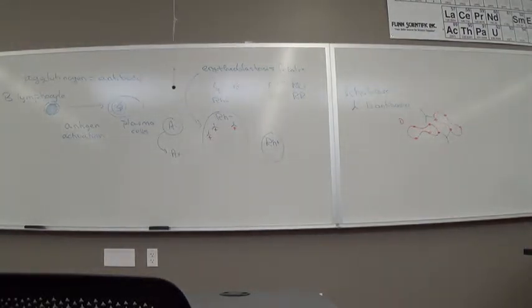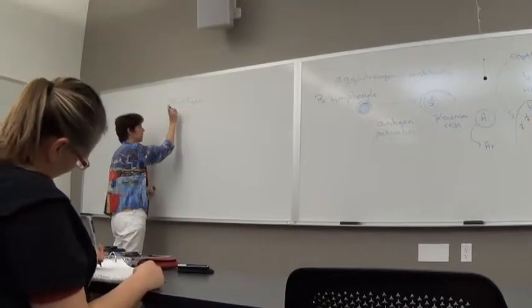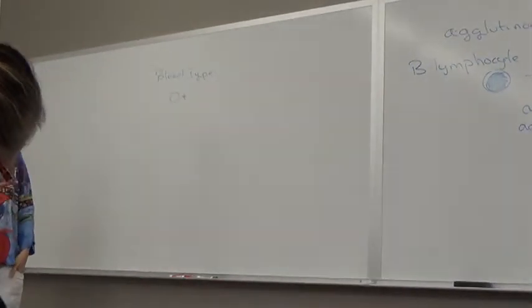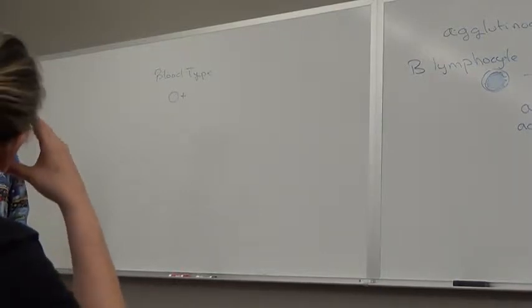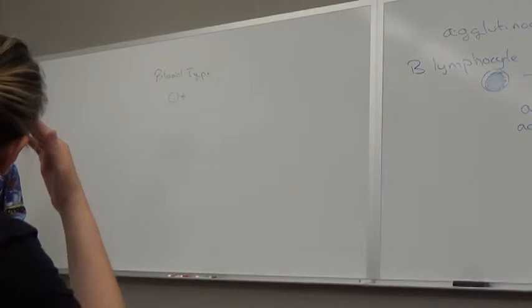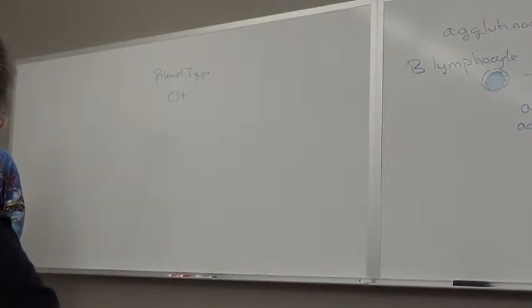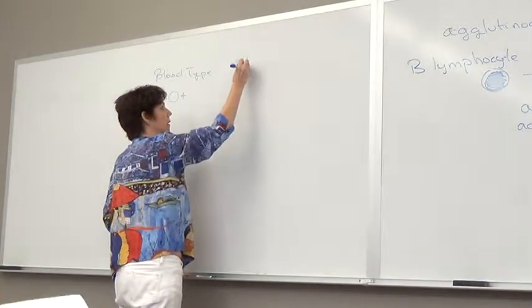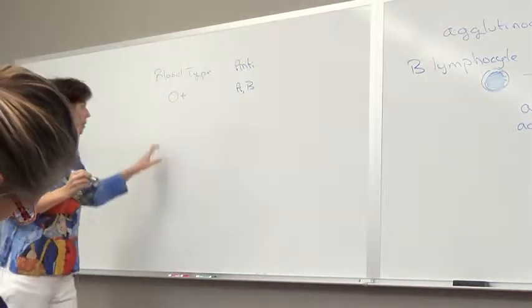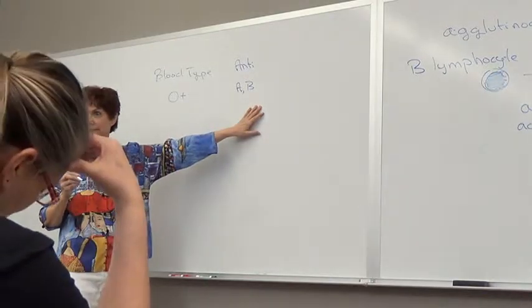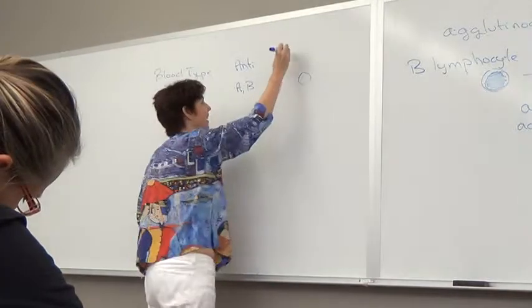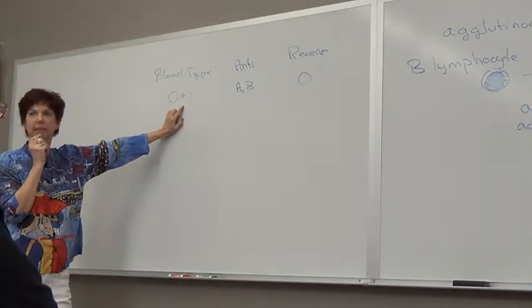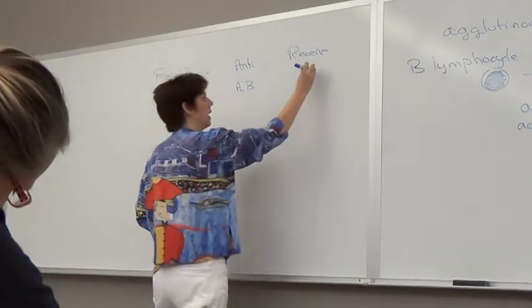If someone has a blood type of O positive and they need a transfusion, let's go through the steps. So remember we need to look at what antibodies are in their blood, and then we cannot give them a blood type that has those antigens. So what antibodies would be present in O positive blood? A and B. So we couldn't give them any blood that had A or B antigens. That leaves us with O. What about the positive here? Did they get positive or negative, does it matter? Because they have positive so we can give them either or. So they can receive O positive or O negative. But I want you to go through those steps so that you've got the confidence behind you.